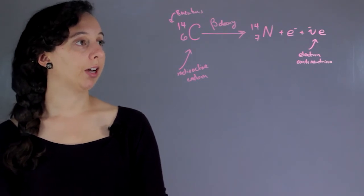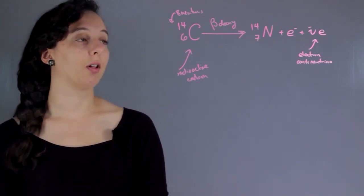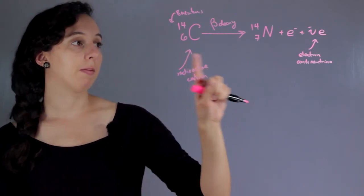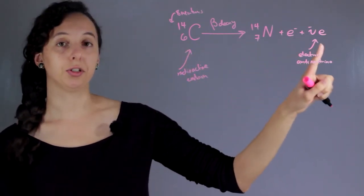And every time you have beta decay, it's going to follow this exact pattern of promoting the atomic number 1, and then releasing these two guys.